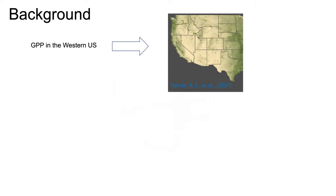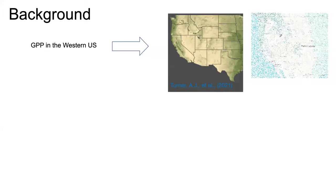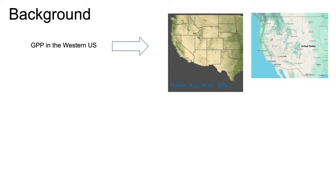This figure shows a daily GPP product derived from the satellite TROPOMI in the NASA Carbon Monitoring System. For the western United States, the GPP doesn't really give you a clear measure of the locations of mountains. In my mind, GPP should more align with the locations of high mountains in the western United States, because that's where the forests are and they have great potential for carbon uptake.